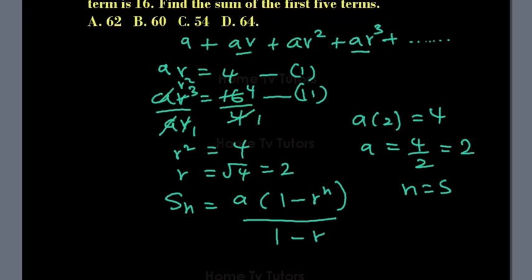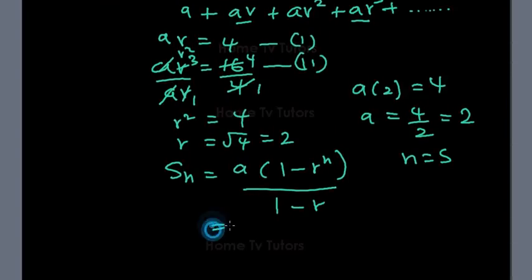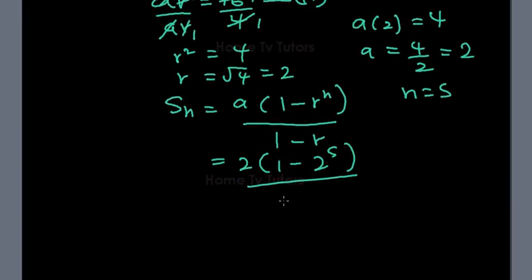So now that we have a is 2 bracket, 1 minus 2 raised to the power of 5, over 1 minus 2. So we have 2 bracket, 1 minus 2⁵. 2 times 2 is 4, times 2 is 8, times 2 is 16, times 2 is 32. So 1 minus 32 is equal to minus 31.